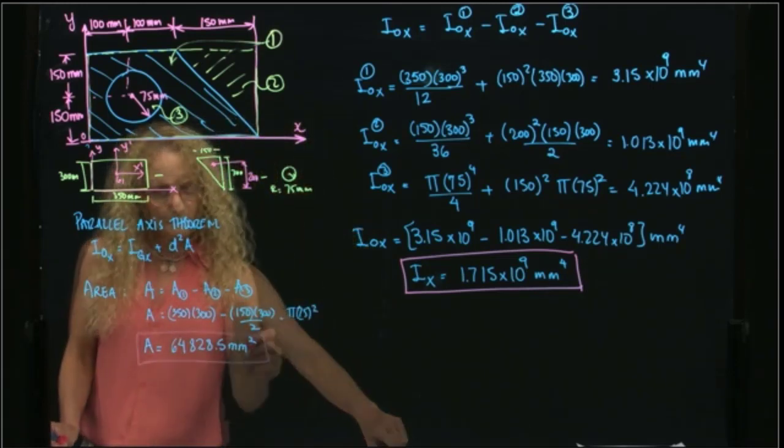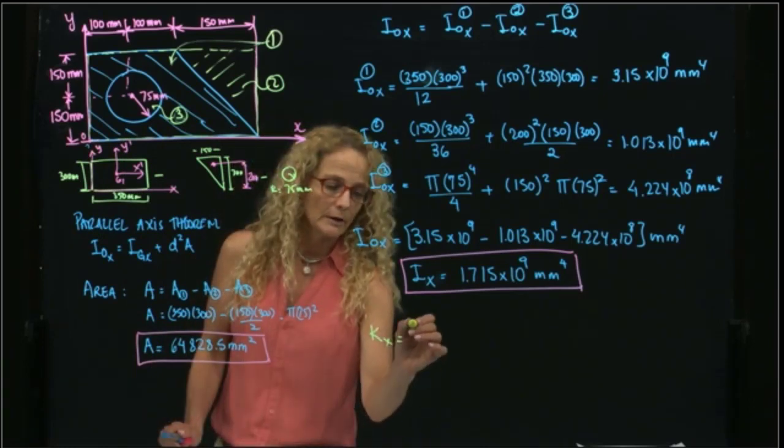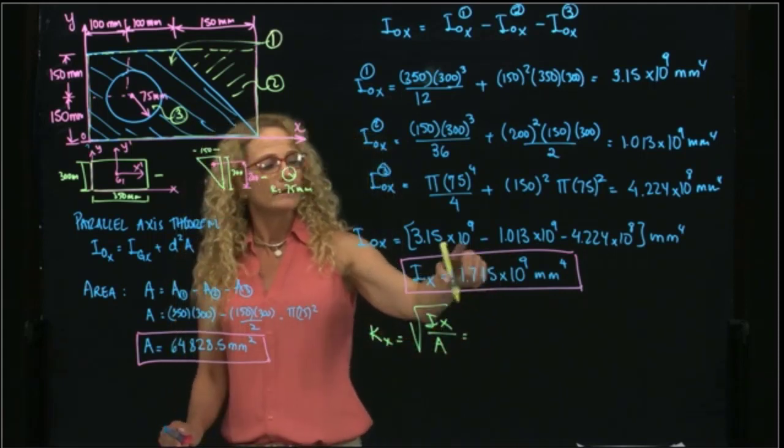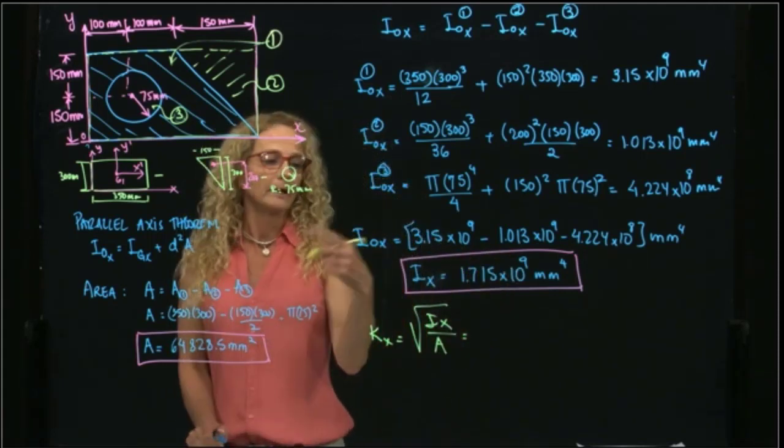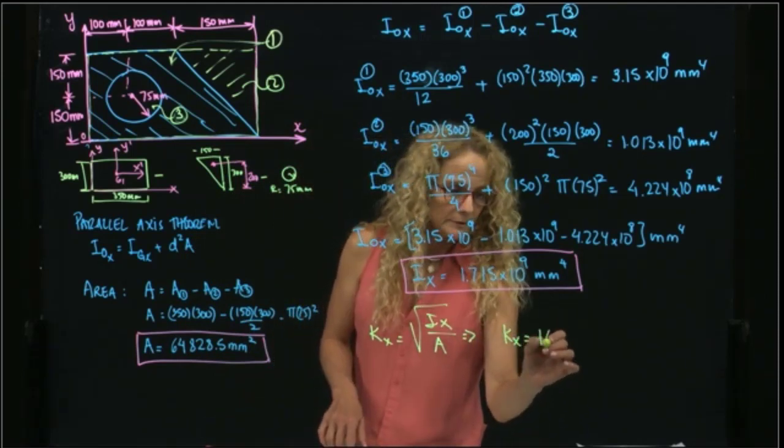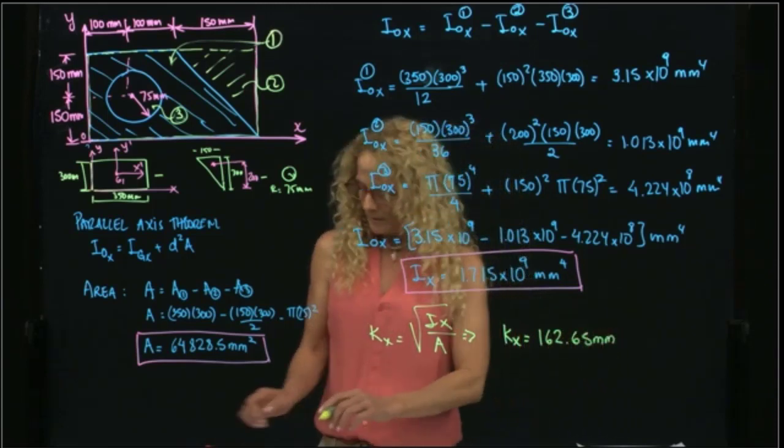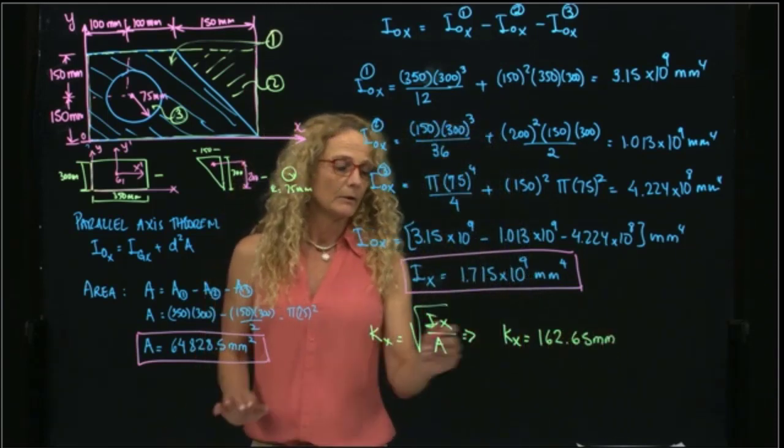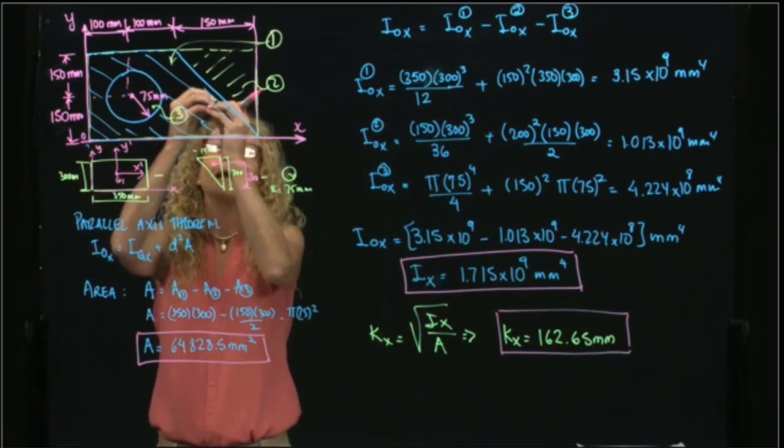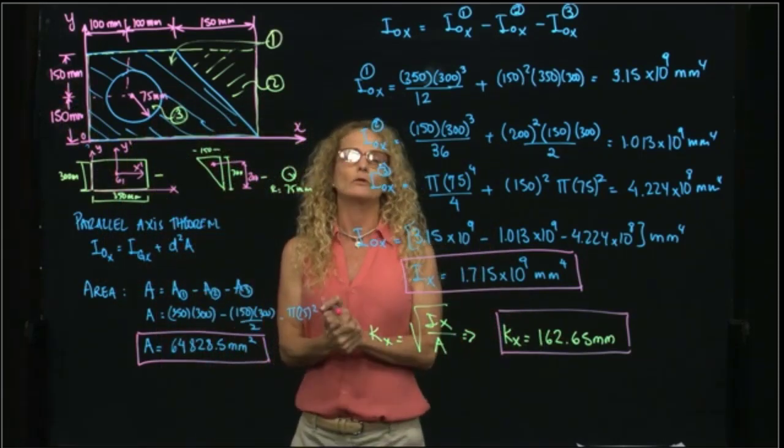And the definition of radius of gyration, kx, is square root of this value over the area. So if we divide this value over this value and take the square root, we get value 162.65 millimeters. That means that we can locate a similar figure with all the area concentrated at 162, and it will give you the same result.